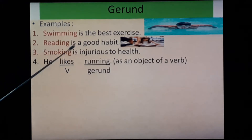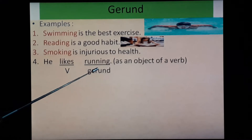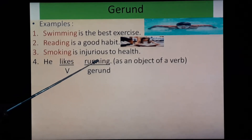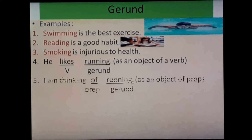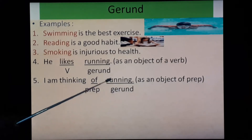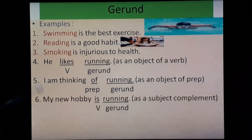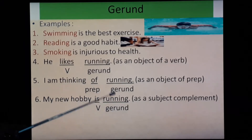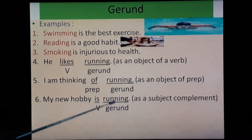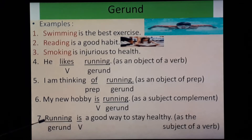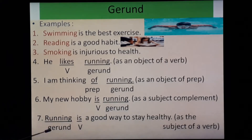Next, 'My new hobby is running.' Here 'is' is the verb and 'running' — run plus -ing — is the gerund. It works as a subject complement. Next, 'Running is a good way to stay healthy.' Here 'running' — run plus -ing — is the gerund, and it works as the subject of a verb.